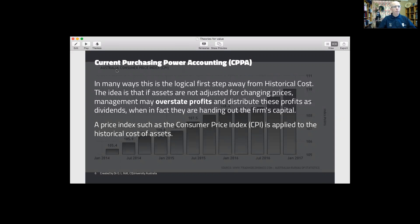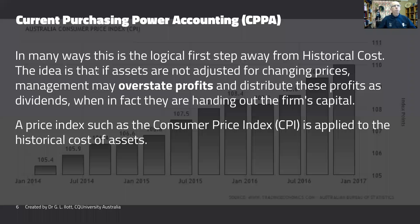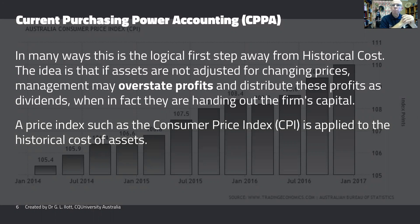Following on from historical cost, we have Current Purchasing Power Accounting, or CPPA. What this means is that we don't discard historical costs altogether. Rather, Current Purchasing Power simply restates the historical cost of an asset in terms of the current state of changes in price. Usually a well-known index of price movements is used, and here in Australia we would probably use the Consumer Price Index, the CPI. So what we have is a mixture of historical cost and indexation toward using the CPI.